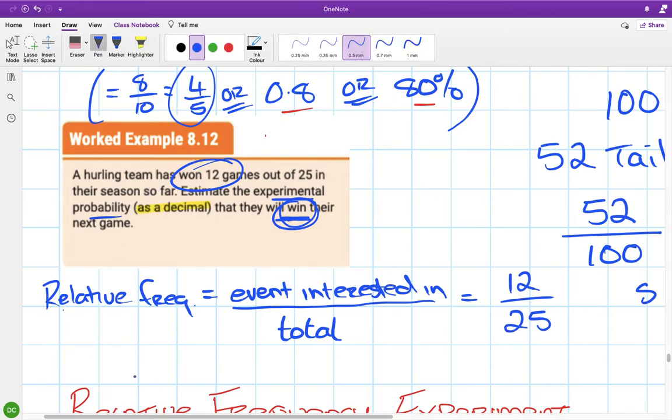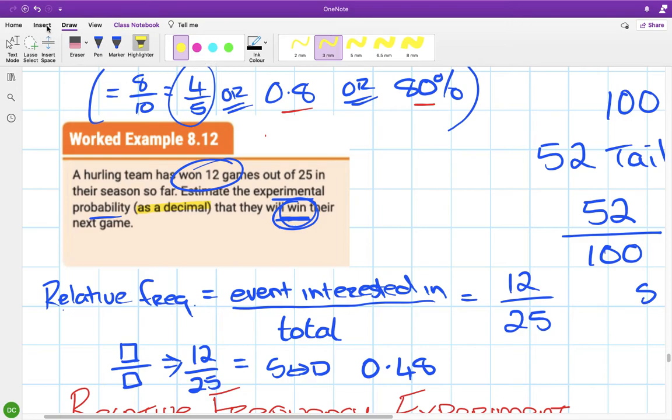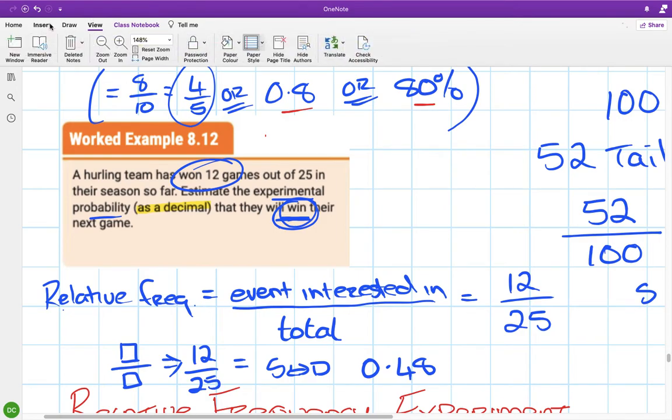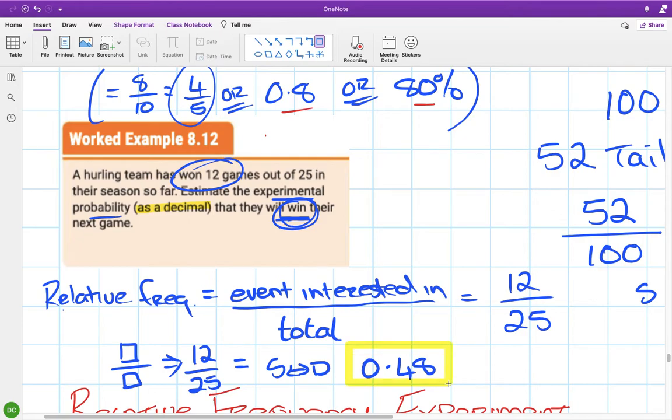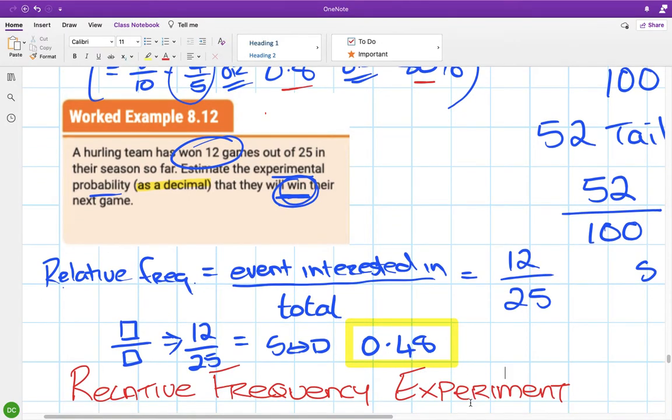So you're going to use this button on your calculator. We talked about this last week. Put in your 12 over 25 and press equals. So 12 over 25, it will throw back the fraction which is fine because you just press the SD button and you should get 0.48. And there's your answer. So normally 12 over 25 would be absolutely fine except that the question asked for a decimal.